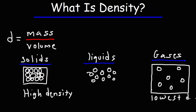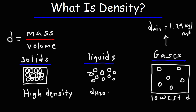Just to put some numbers into this: the density of air is 1.29 kilograms per cubic meter. So if you have one cubic meter of volume, the amount of mass in that space is 1.29 kilograms. Now let's compare that to a liquid like water. The density of water is 1,000 kilograms per cubic meter.